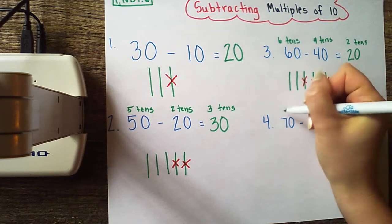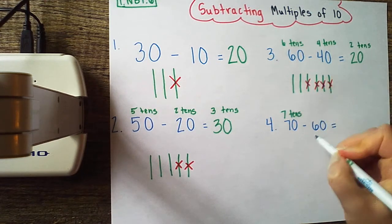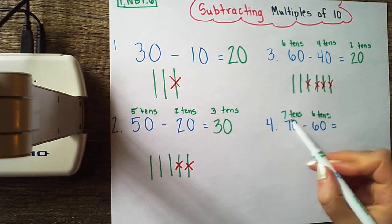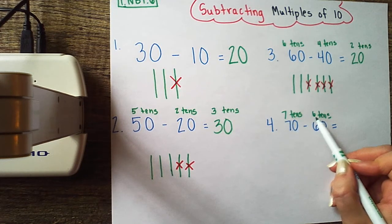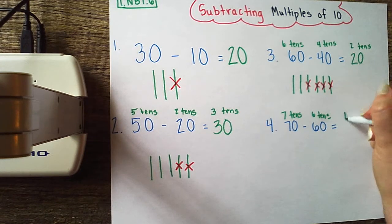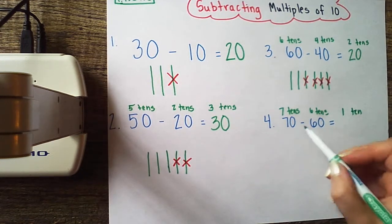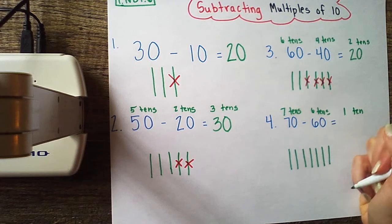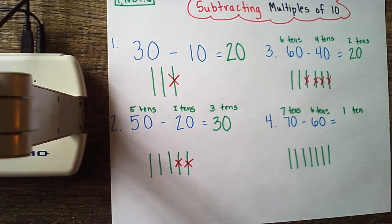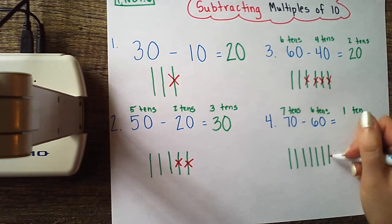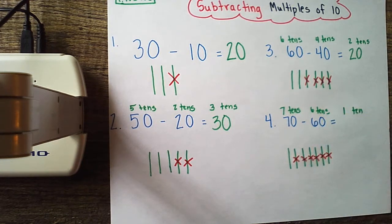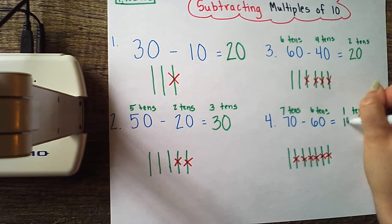Last one: 70. We know that 70 is the same as 7 tens, and we're subtracting 60, which is the same as 6 tens. Seven minus 6 is 1, so that's going to help me predict that 7 tens minus 6 tens is going to leave me with 1 ten. Let's confirm by drawing our picture. 70 is the same as 7 tens. I'm going to cross out 6 of them: 1, 2, 3, 4, 5, 6. And I should be left with 1 ten. Look at that, I am! 70 minus 60 equals 10.